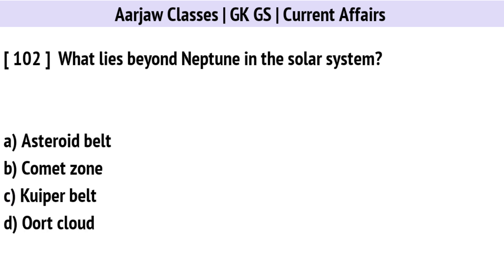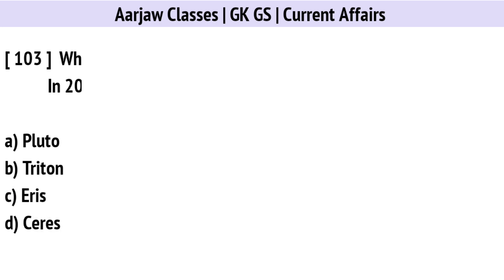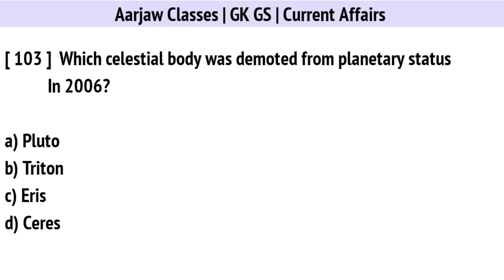What lies beyond Neptune in the solar system? Correct option is C: The Kuiper Belt.